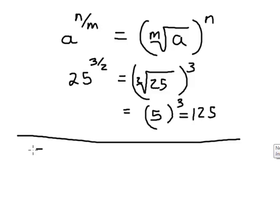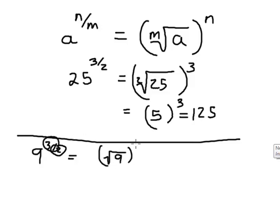Let's look at another one. 9 to the 3/2 means take the square root of 9 and then raise it to the third power. That gives me 3 to the third, which is 27.